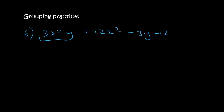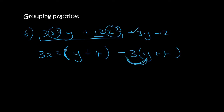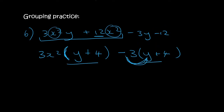Here's number 6. In the first two terms we take out 3x squared — both terms have two x's — and we're left with y plus 4. In the next two terms we take out minus 3, and then we'd be left with y plus 4. If I multiply those two I get a negative and if I multiply those two I get a negative — that's correct. So now we have y plus 4 in both, we take that out as a common factor, and then we're left with 3x squared minus 3.